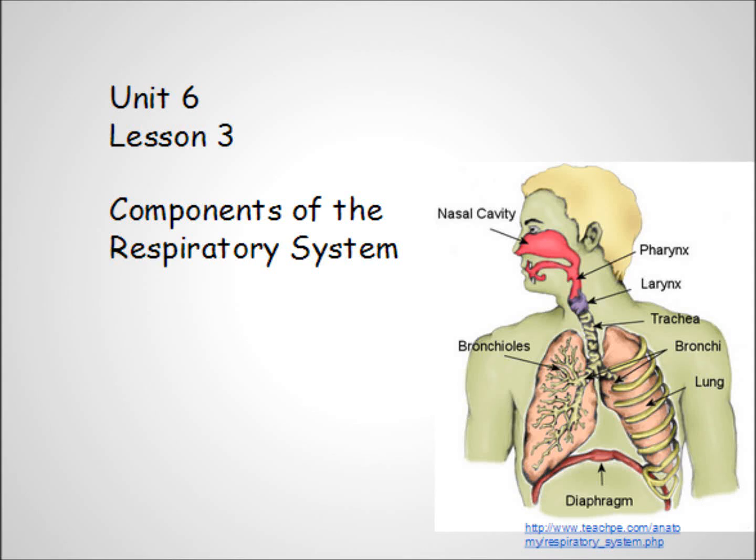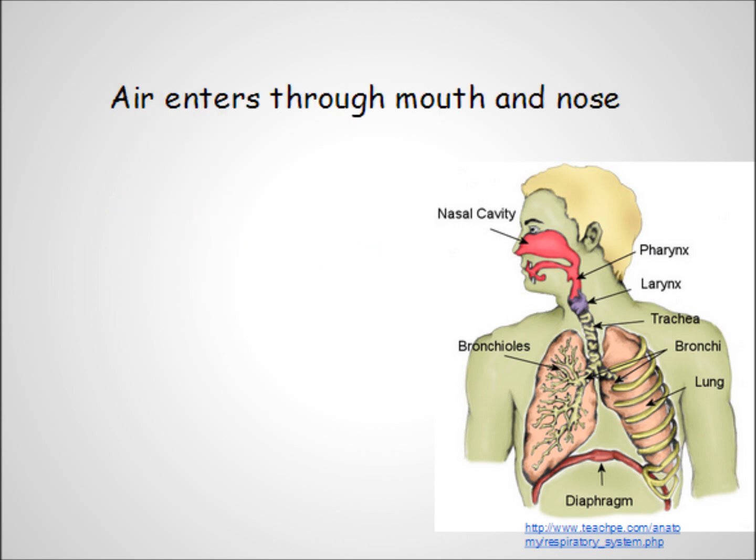Unit 6, Lesson 3: Components of the Respiratory System. Alright, it's time to get to the meat of the system. The respiratory system consists of the lungs and everything it takes to get air into and out of the lungs. We'll start at the beginning.